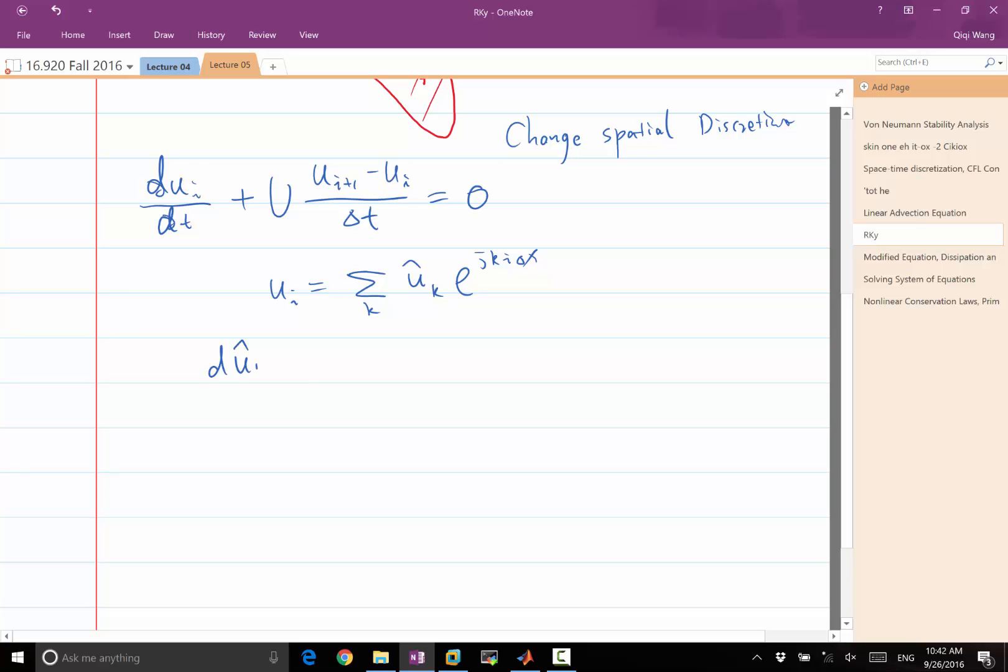ui is equal to summation k of u hat of k e to the j k i delta x. We get d u hat of k dt on the left-hand side, plus u times u hat of k from here and exponential of j k delta x minus 1 over delta x equal to 0. Is it clear how I got this? This is basically plugging i plus 1 into here and factoring it out. The common term that is e to the j k i delta x got pulled out from both the du dt and also this term and also this term.